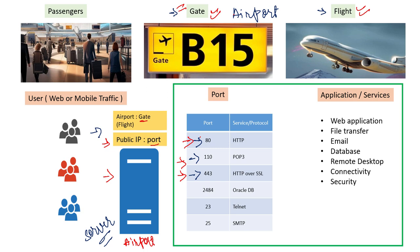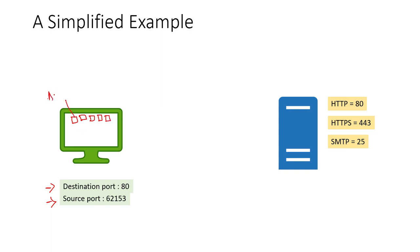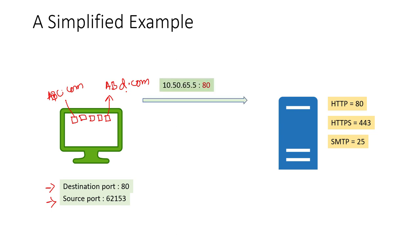Now let's move forward with a simple example. I have a machine that wants to access some services on a server. I have a destination port — the destination port is the service I want to access. And I have a source port — the source port means what source I am using. For example, I have a web application with multiple tabs open. On one tab I am accessing abc.com and in a different tab I am accessing abd.com.